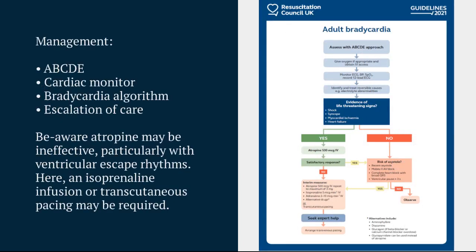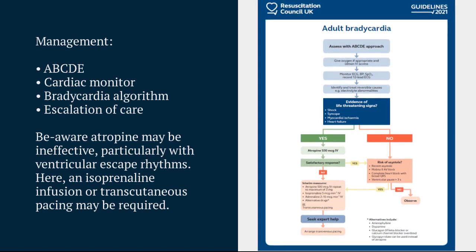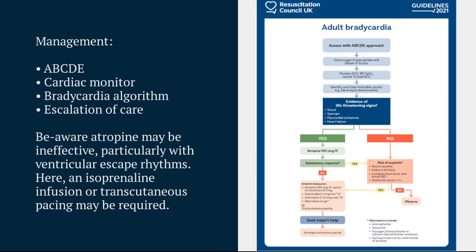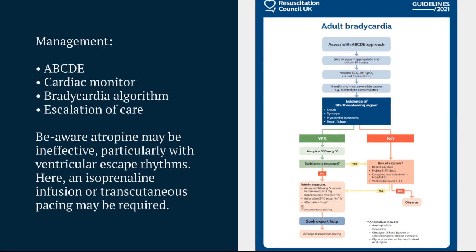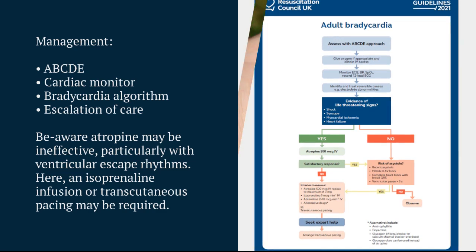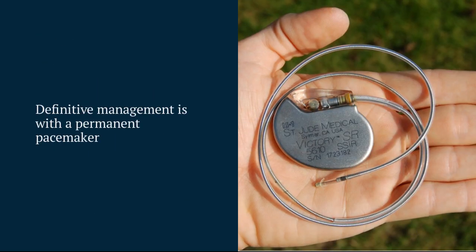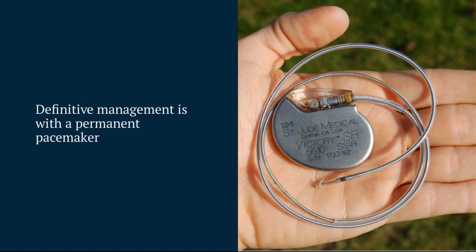In terms of management, acutely we're going to adopt an ABCD approach as ever, escalating care early and when appropriate. These patients need to be on a cardiac monitor and we're going to follow through the Resus Council bradycardia algorithm. The algorithm might suggest we use atropine; unfortunately atropine is going to be ineffective when we have ventricular escape rhythms, and you're likely to need either an isoprenaline infusion, which is a beta agonist, or transcutaneous pacing. Ultimately these patients will need a permanent pacemaker, so you should seek the opinion of a cardiologist early.